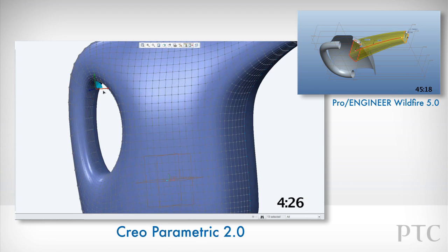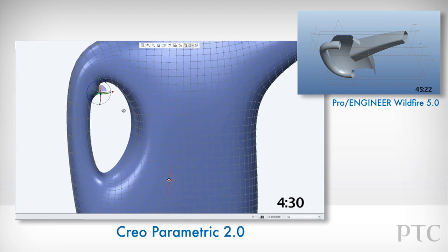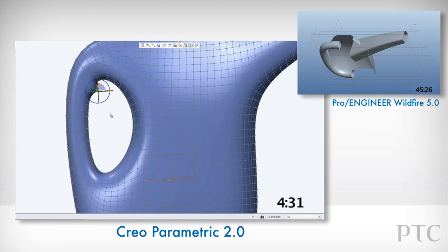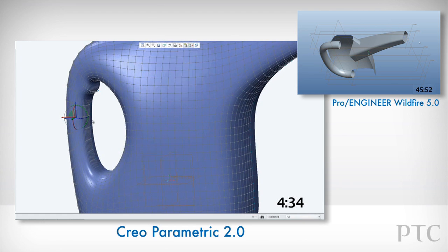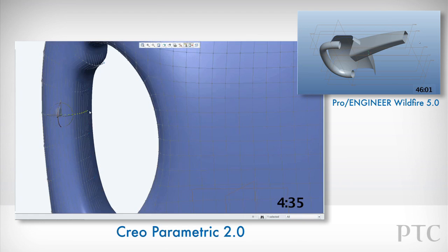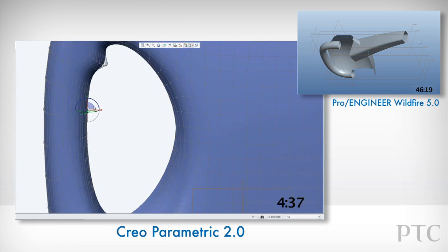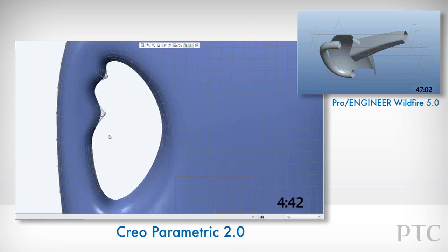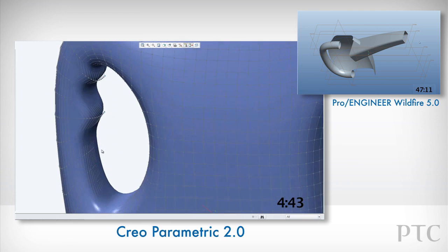Making changes in Pro Engineer Wildfire to this type of geometry would have taken many features, many curves, and a lot of time. Once we're satisfied, we can then go back to the original mesh and still have the detail preserved.